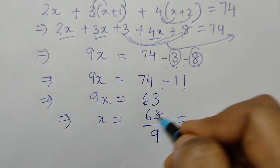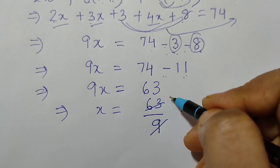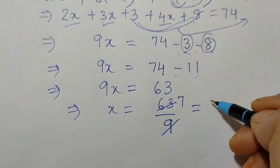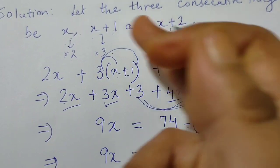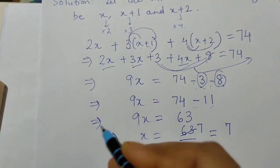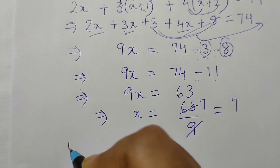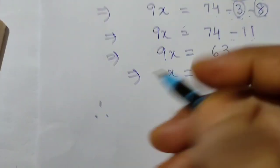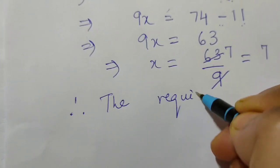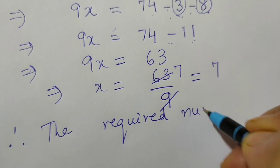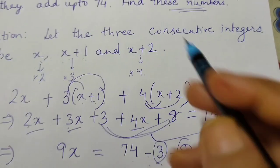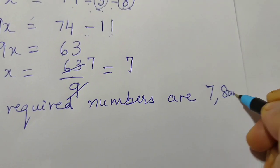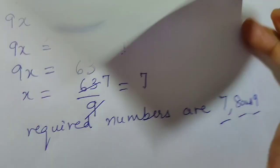Dividing 63 by 9 — since 9 times 7 is 63 — we get x equals 7. After getting x as 7, we find the remaining two integers: x plus 1 is 8, and x plus 2 is 9. Therefore the required numbers are 7, 8 and 9. As they are consecutive, obviously 7, 8 and 9.